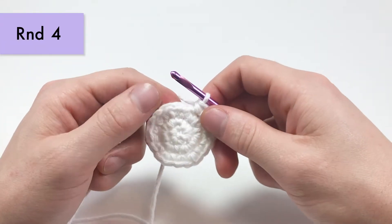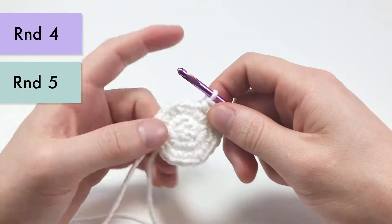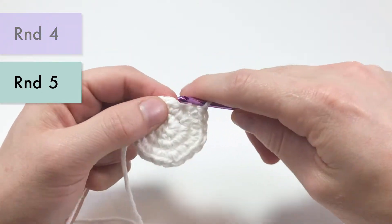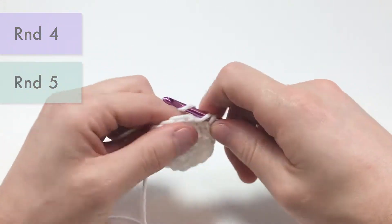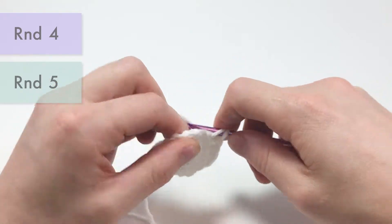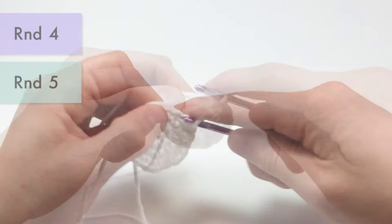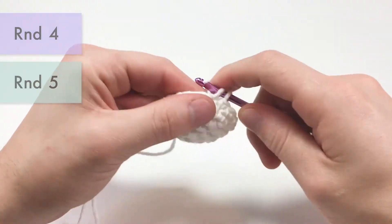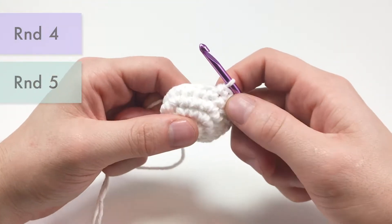For round four and five, two rounds total, we'll be single crocheting into each stitch all the way around. So that's just one single crochet into each stitch for two rounds. So I just finished up round five.